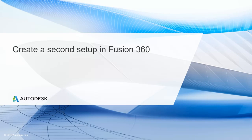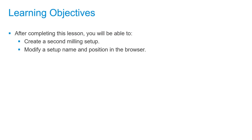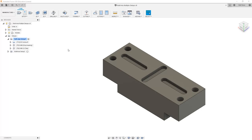In this lesson we'll create a second setup in Fusion 360. After completing this lesson you'll be able to create a second milling setup and modify a setup name and position in the browser. Let's carry on with the file from our previous example, and if you had any difficulties you can upload the supplied file multi-axis multiple setups version 9.